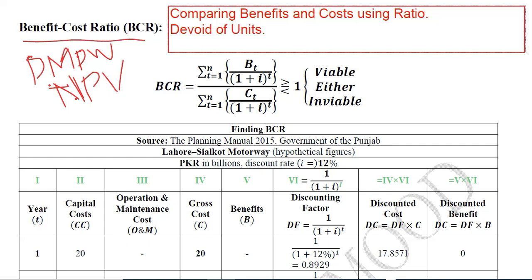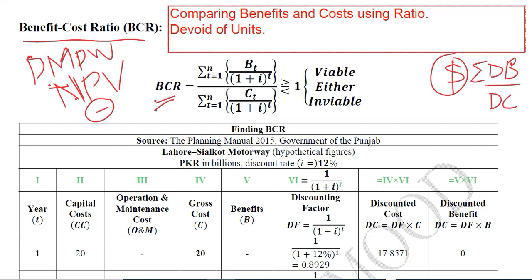In NPV, we used the subtraction method, but now we will use the ratio method and there will be no units — that is, no dollars or any other currency. BCR is a ratio of the sum of discounted benefits to the sum of discounted costs, as expressed in the summation formula.